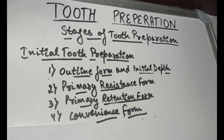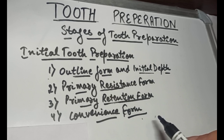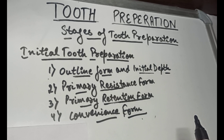The last step — the fourth step — of the initial tooth preparation stage is the convenience form. It means improving access and visibility as needed. It is an extension of the preparation in order to provide ease of visibility, accessibility, and ease of operation in preparation and restoration of the tooth. Those were the initial stages of tooth preparation.